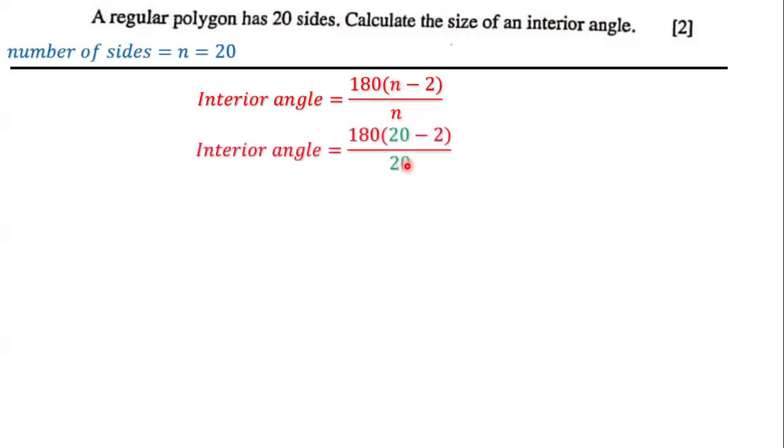And so we have 20 and 20. So the interior angle is going to be equal to 180 multiplied by 20 minus 2, all over 20. And so 20 minus 2 is going to be 18.